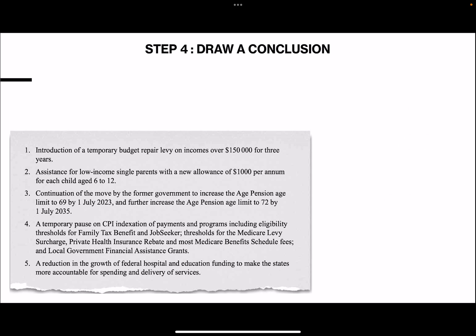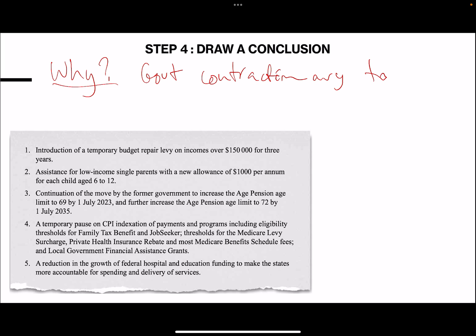The final step is to draw a conclusion - this is the 'why.' Why would the government be doing this? So once again, this links back to your theory. It's something along the lines of: the government is going contractionary to manage the level of economic activity - to slow down the economy, to manage spending. This is where you start to come back to your theory.